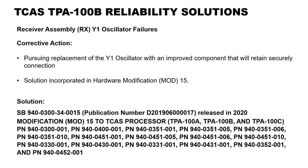As a corrective action, Honeywell is pursuing replacement of the Y1 oscillator with an improved component that will retain a secure connection with the receiver board when exposed to substantial vibrations and environmental stresses. The solution incorporated is hardware mod 15. This solution can be implemented through Service Bulletin 940-0300-34-0015.